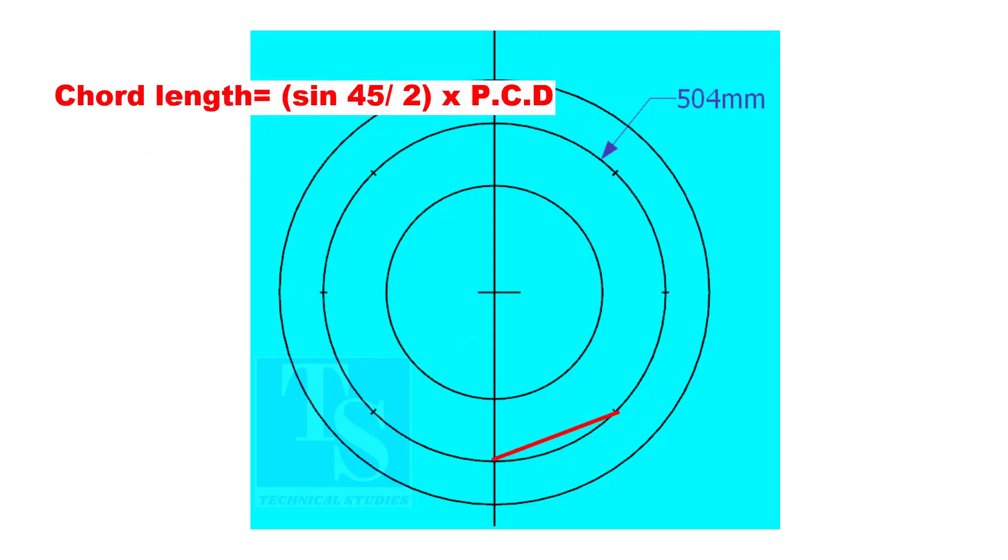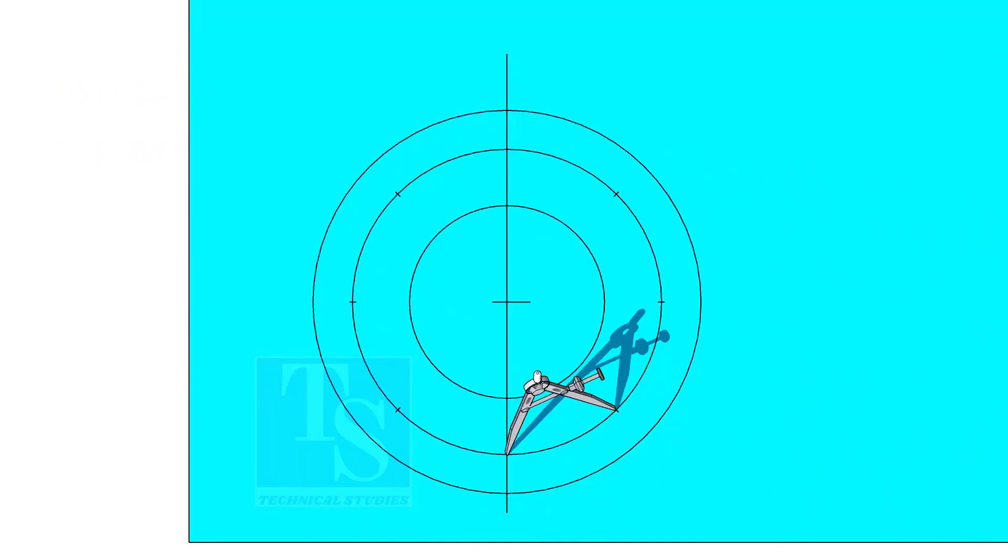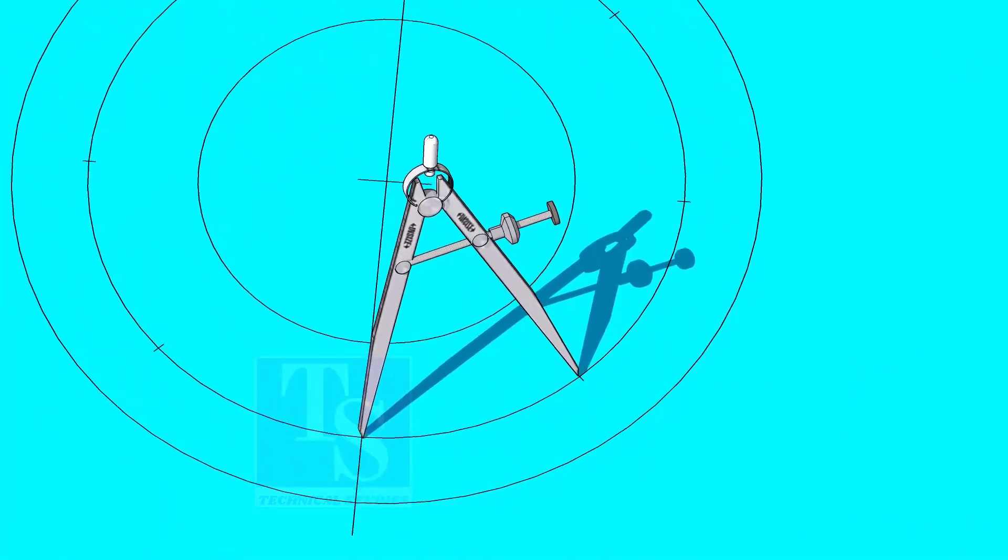Chord length equals sine 45 divided by 2, multiplied by PCD. The chord length is 192.8 millimeters. Adjust the divider to 192.8 millimeters and divide the PCD into 8 parts.